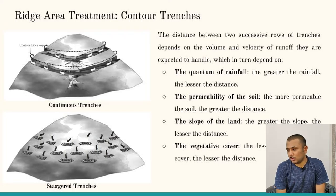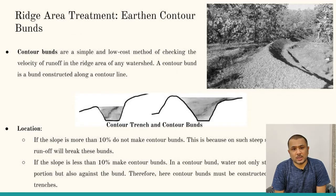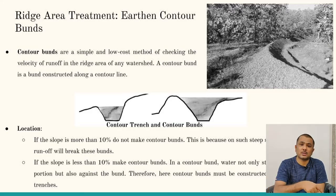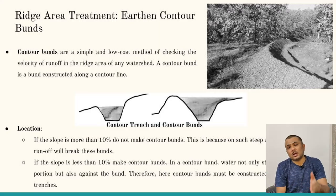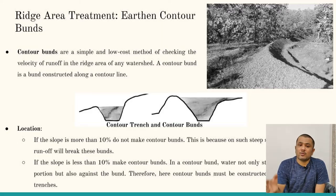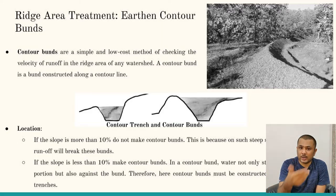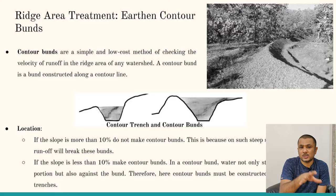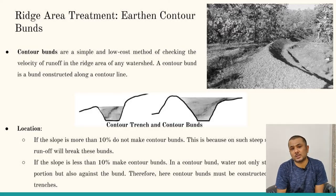The next technique is to construct counter bunds. Counter bunds are similar to counter trenches — in counter trenches we dig trenches along contour lines and leave them. With counter bunds, wherever we dig, we also construct a bund on the upstream side of the trench. This provides two advantages: storing water within the trench and further stopping reduced-velocity flow with the bund.